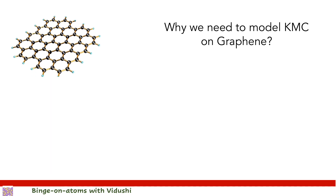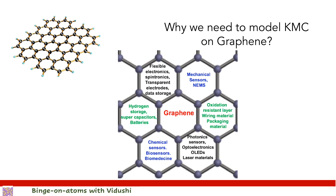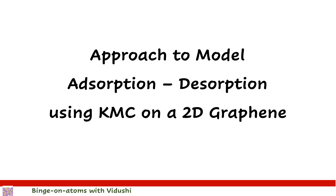Why am I modeling adsorption and desorption on graphene? Graphene is employed so extensively — from hydrogen storage to sensors and catalysis — that any lecture on its utility will be small. Atom adsorption and desorption kinetics on graphene impacts all its applications and is most often investigated by computational simulations, so in this video I will share my approach to model adsorption and desorption using KMC on a graphene lattice.